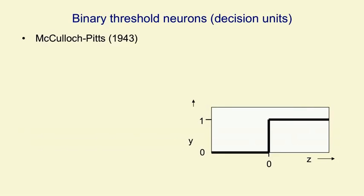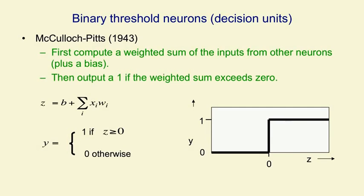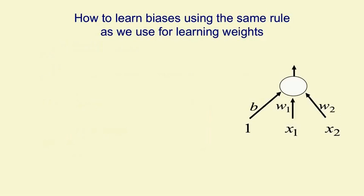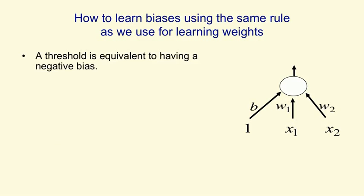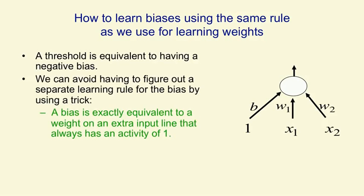The decision unit in a perceptron is a binary threshold neuron. These compute a weighted sum of the inputs they get from other neurons, add on a bias to get their total input, and then give an output of 1 if that sum exceeds 0, and an output of 0 otherwise. We don't want a separate learning rule for biases, and it turns out we can treat biases just like weights. If we take every input vector and stick a 1 on the front of it, we can treat the bias as the weight on that first feature that always has a value of 1. The bias is just the negative of the threshold, so we don't need a separate learning rule for it.